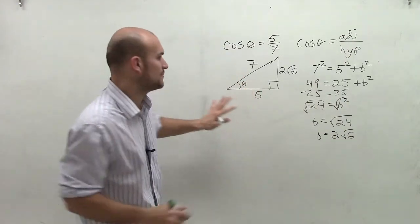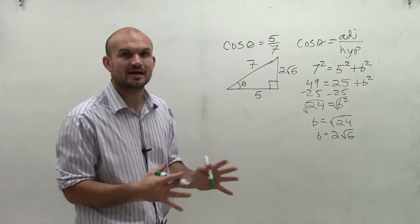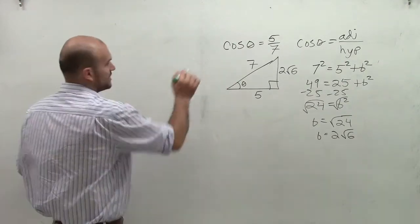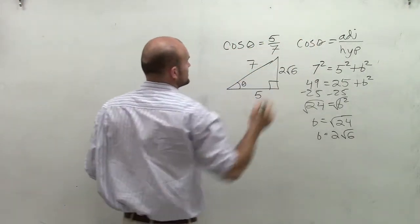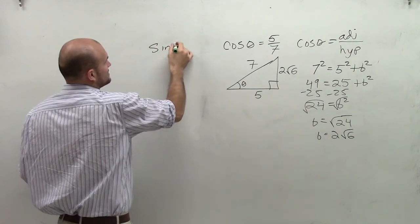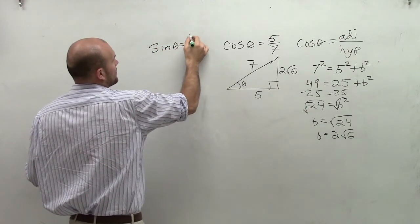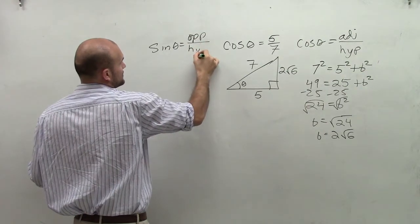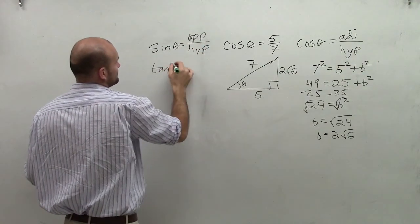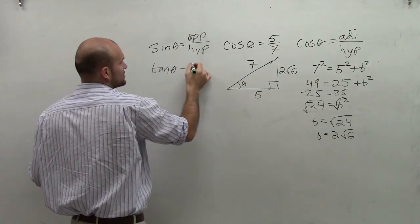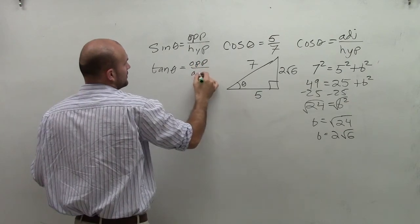So now once we have this, remember, we need to go back through all of our trig identities. And remember, so we already know cosine, if you remember, was adjacent over hypotenuse. Sine of theta is opposite over hypotenuse. And your tangent of theta is going to equal opposite over adjacent.